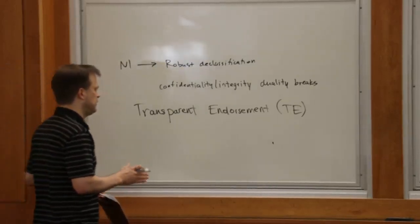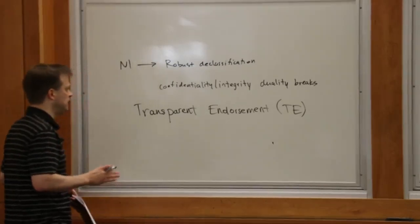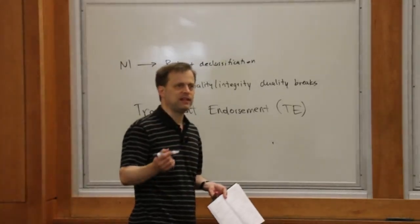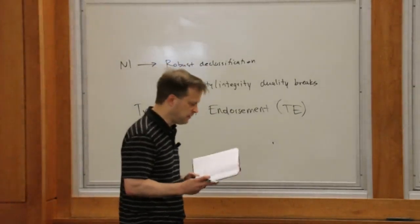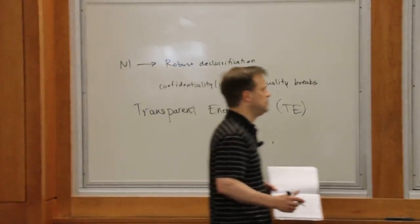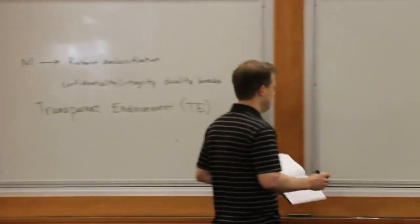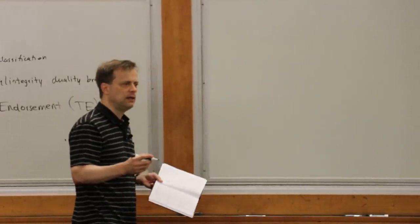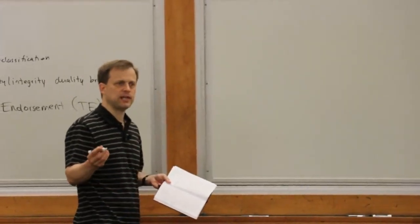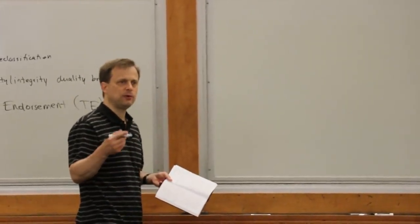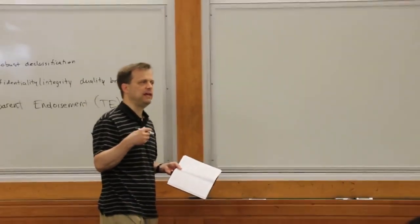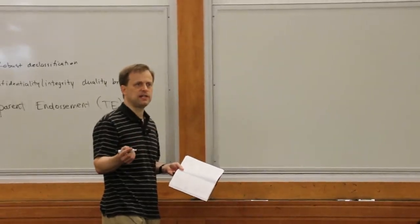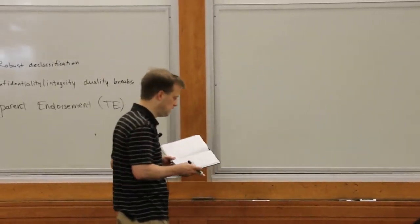To give a justification, let me write a little example that breaks transparent endorsement. It's the same password checker example I showed last time, except now I'm going to write it in a way that satisfies robust declassification, unlike the previous version.